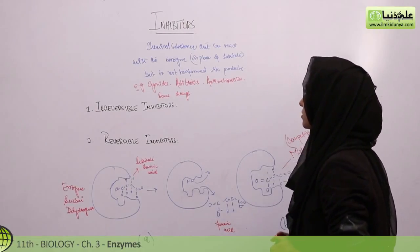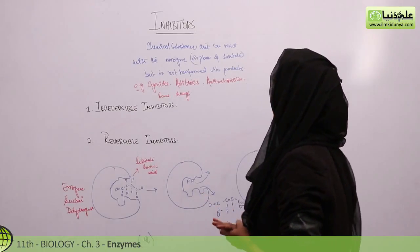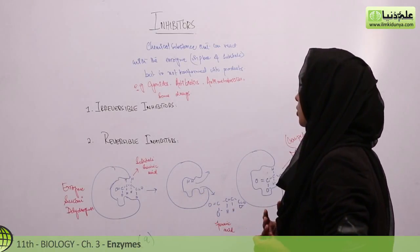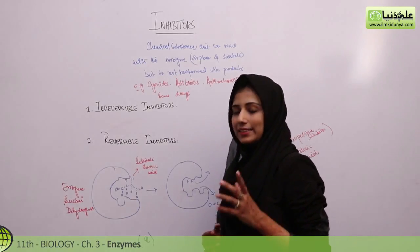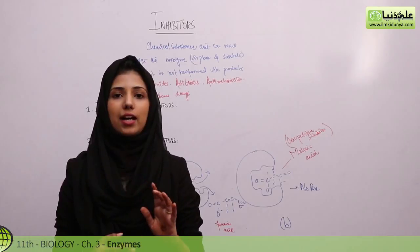The next topic in this chapter is inhibitors. Inhibitors are chemical substances that can react with the enzyme in place of substrate but are not transformed into products. Enzymes have a substrate binding site.